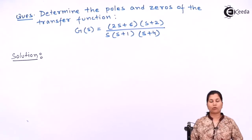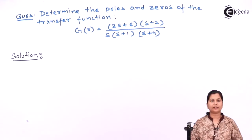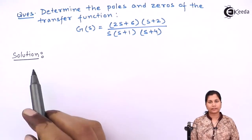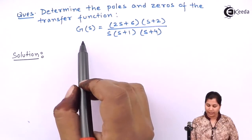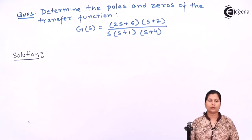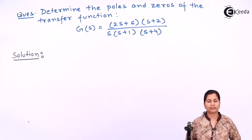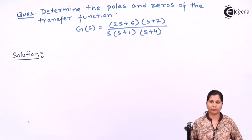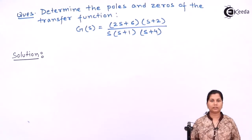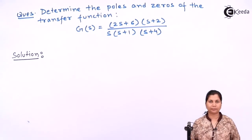We know that when we want to determine the poles and zeros, we have to factorize the numerator polynomial and the denominator polynomial. To find the poles and zeros, we equate the numerator polynomial and the denominator polynomial to zero and find out the factors of these polynomials. Let's find out the factors of the numerator and the denominator polynomial.